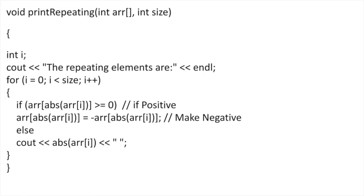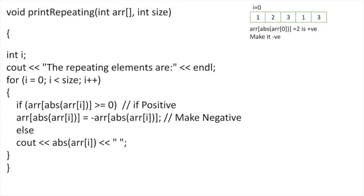Let's explain this with an example, traversing the array from start to end. When i=0, we check array[abs(array[0])]. Array[0] is 1, absolute of 1 is 1, and array[1] is 2, which is a positive value. So according to the algorithm, we make it negative. In the next iteration, the 2 becomes -2.